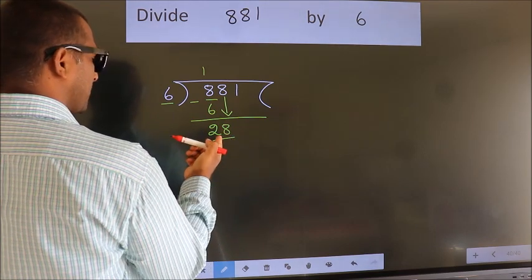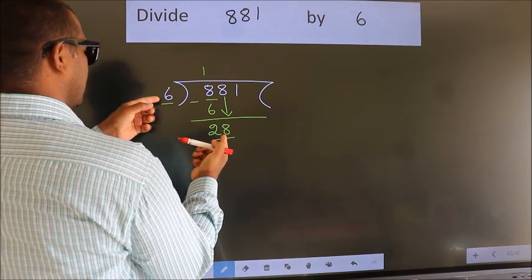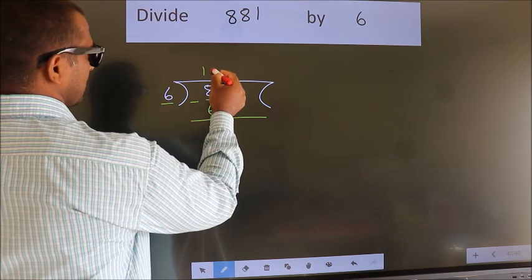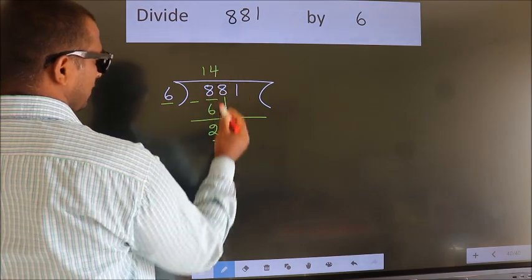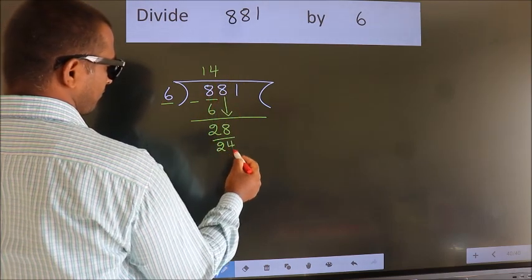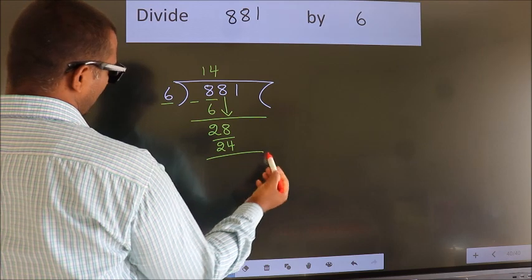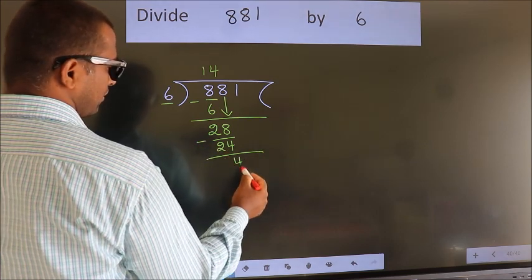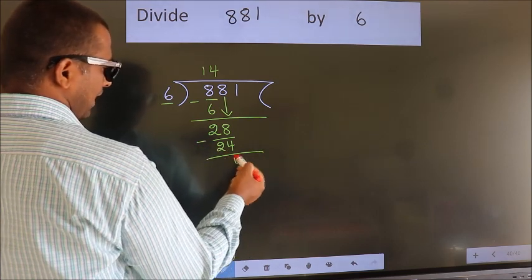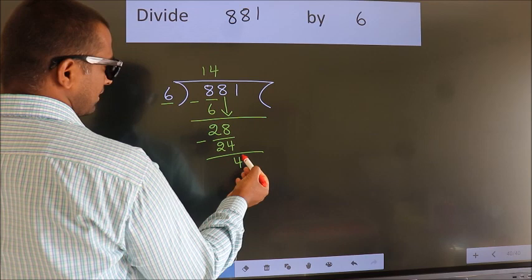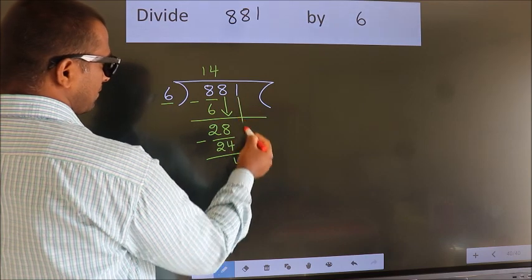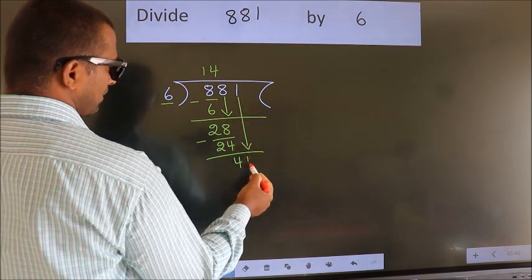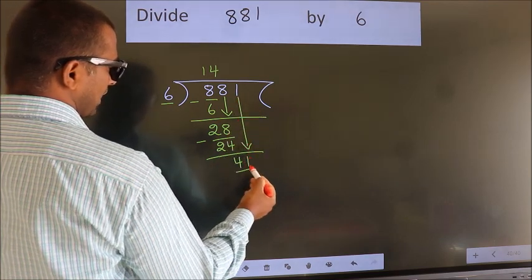A number close to 28 in the 6 table is 6 × 4 = 24. Now we subtract. We get 4. After this, bring down the beside number. So 1 down. So 41.